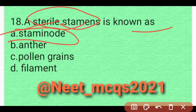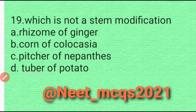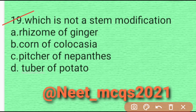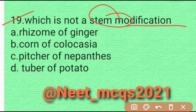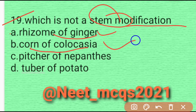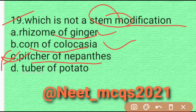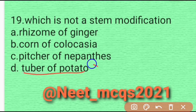Question 18: Which is not a stem modification? Option A — rhizome of ginger: it is a stem modification. Option B — corm of colocasia: it is also a stem modification. Option C — pitcher of Nepenthes: this is not a stem modification. Option D — tuber of potato: it is also a stem modification. So option C is correct.